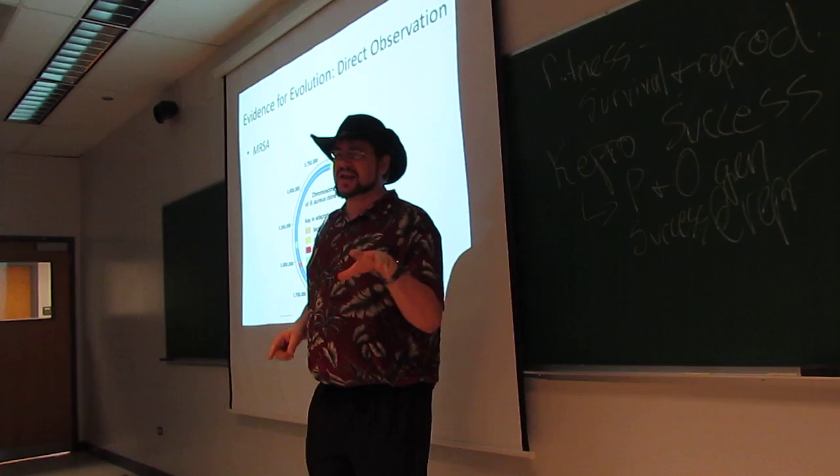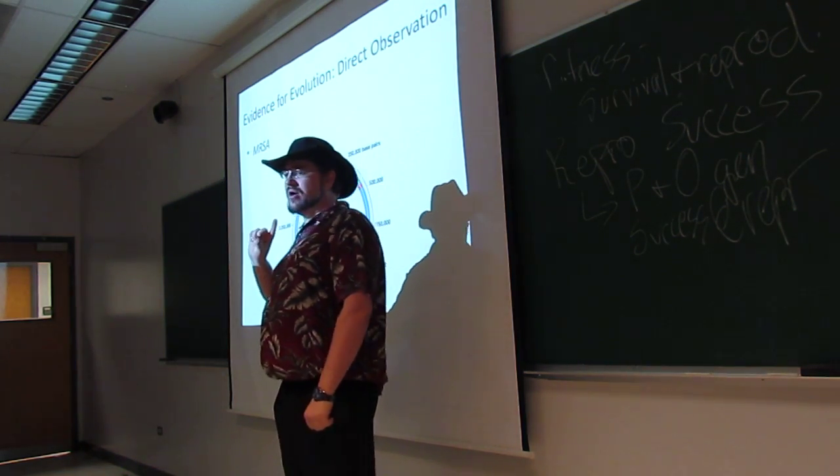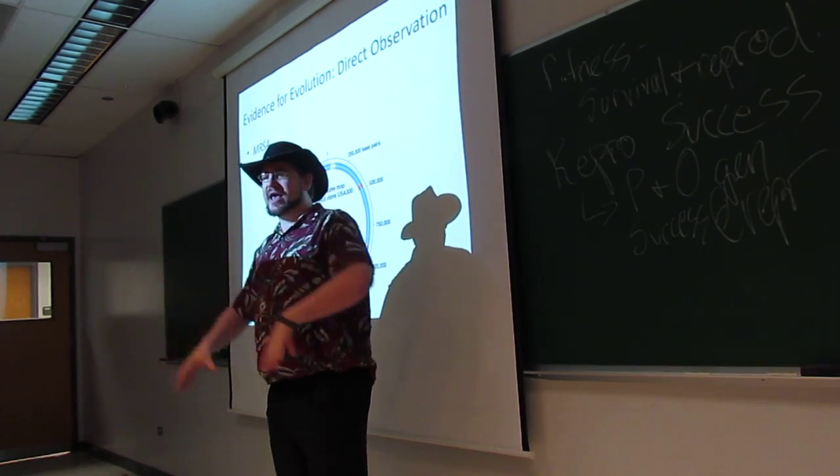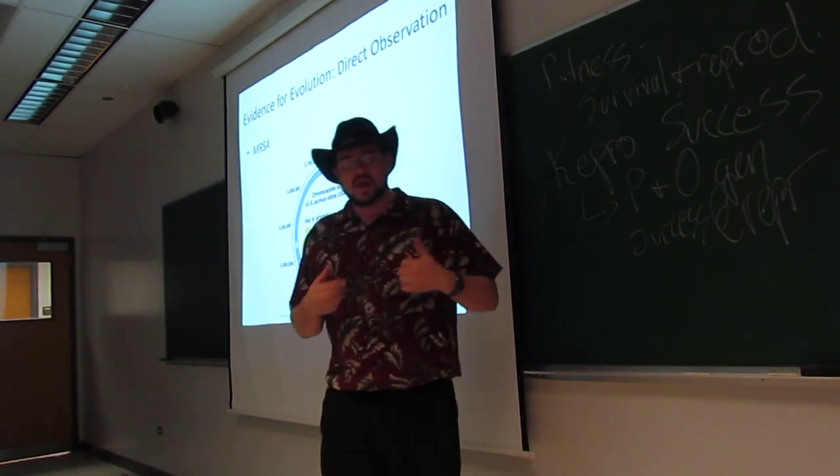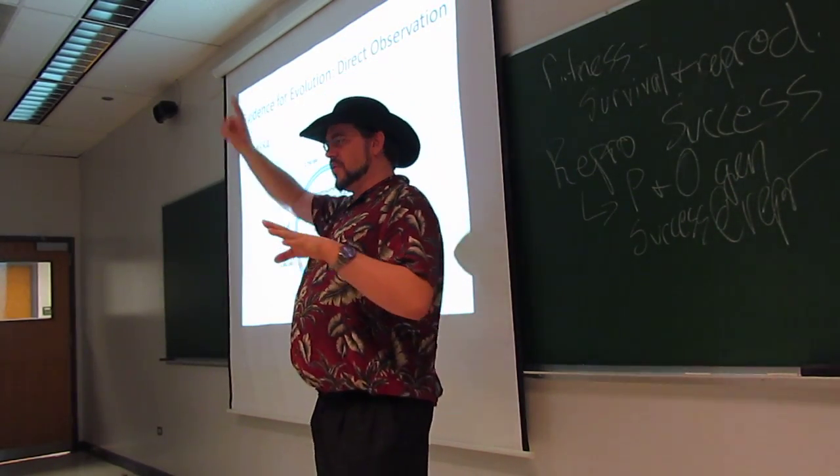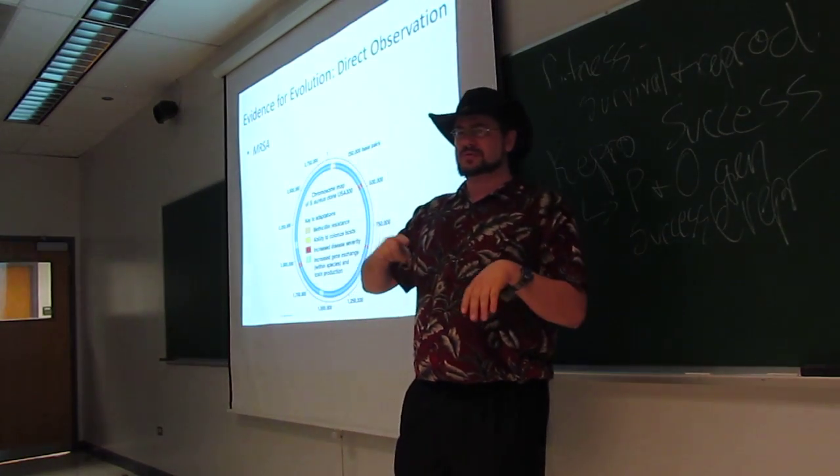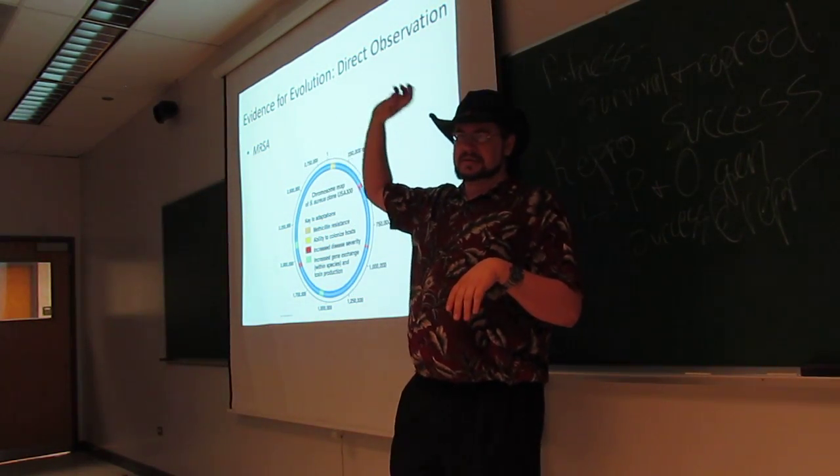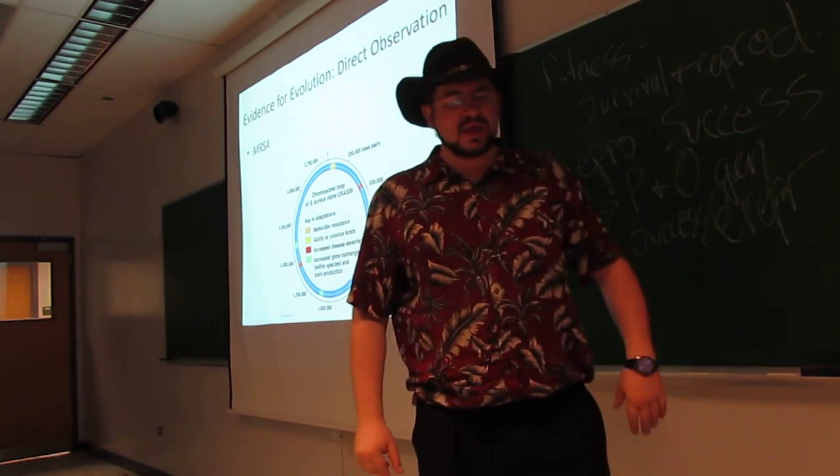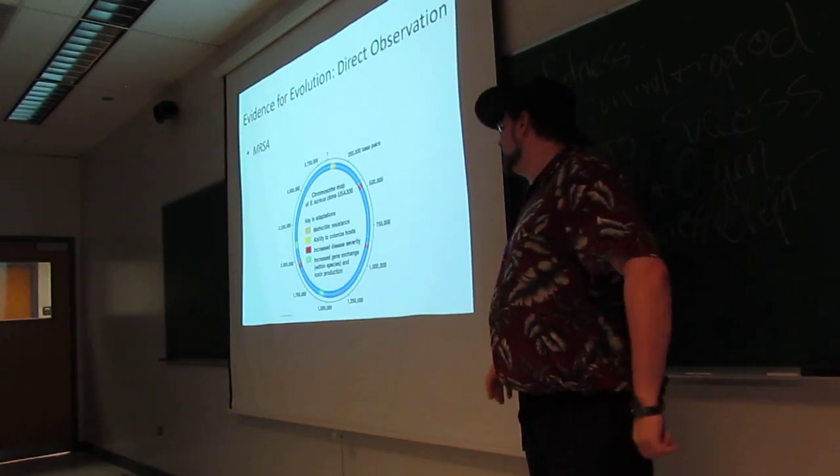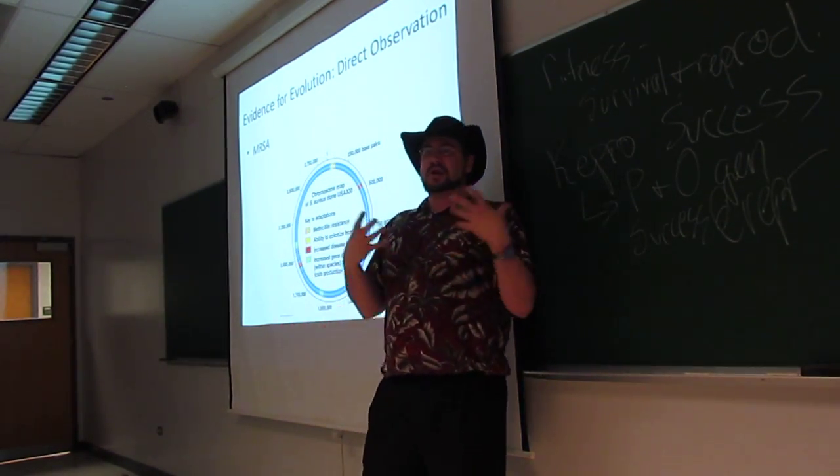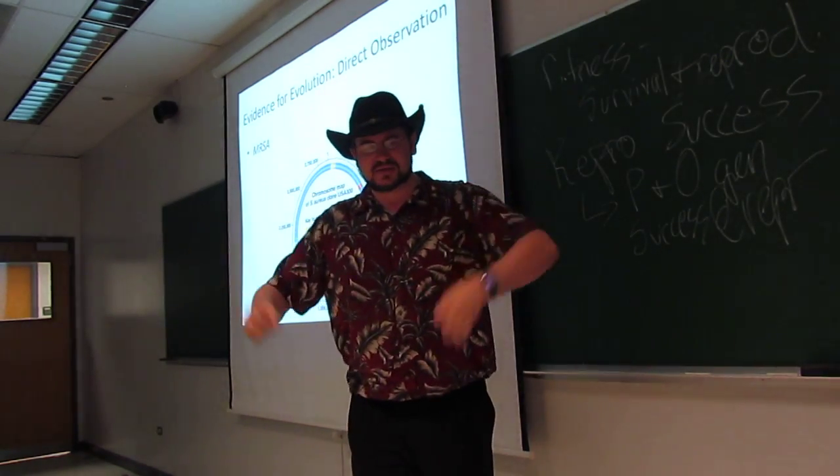When you have that kind of selective pressure, when something allows the organism to live, it very quickly passes on in the population. Bacteria reproduce very quickly. They have logarithmic growth. One produces two, two produces four, eight, sixteen, thirty-two, and so on. So they reproduce very quickly. Once that methicillin-resistant gene became present in the population, that population very quickly became methicillin-resistant.